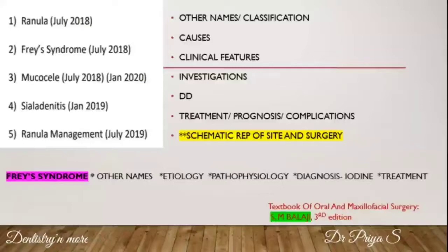For Frey syndrome, again mention the synonyms, the etiology, and the pathophysiology. You need to mention how the autonomic fibers of the auriculotemporal nerve are affected, then elaborate a little on the pathophysiology. For diagnosis, you perform the iodine starch test — mention what the iodine test is for Frey syndrome — and then finally the treatment.